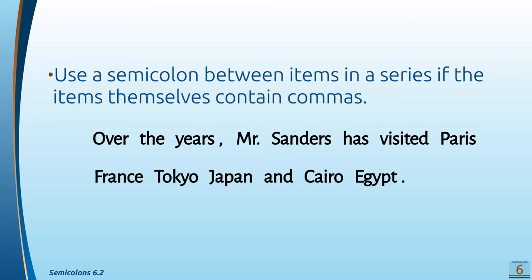For example: over the years, Mr. Sanders has visited Paris, France; Tokyo, Japan; and Cairo, Egypt. He's not saying he visited Paris and he visited France separately — he visited Paris, France, because Paris is in France. So we separate the city and the country with a comma. Tokyo is in Japan — city and country separated with a comma. And Cairo is in Egypt. So the list is Paris, France; Tokyo, Japan; and Cairo, Egypt, to show it's three destinations, not six separate places.